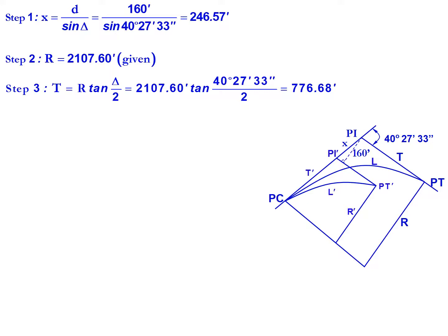Our third step is to find the existing tangent length that is equal to the radius times the tangent of delta divided by 2. 2,107.6 feet multiplied by the tangent of 40 degrees 27 minutes 33 seconds divided by 2 will give us a tangent length of 776.68 feet.